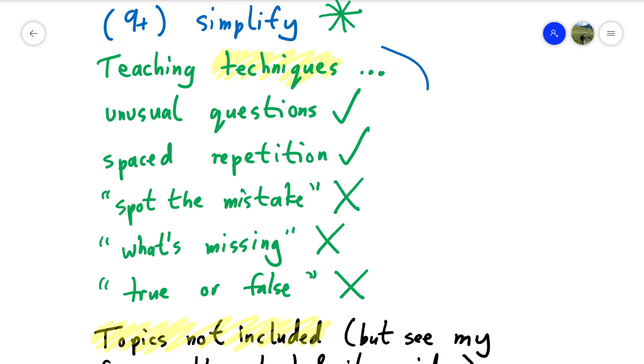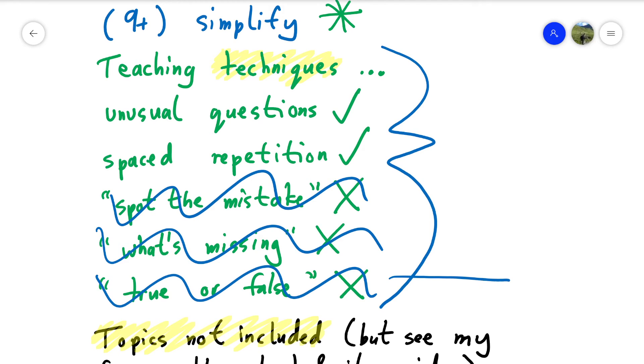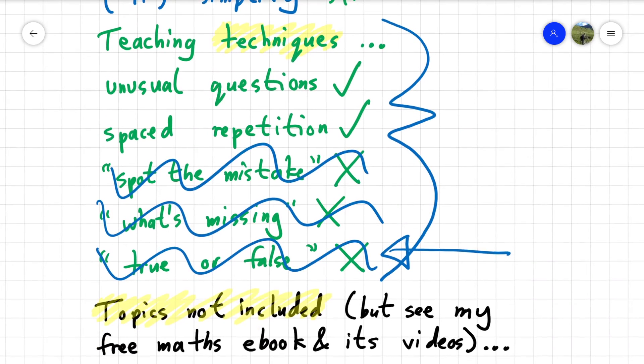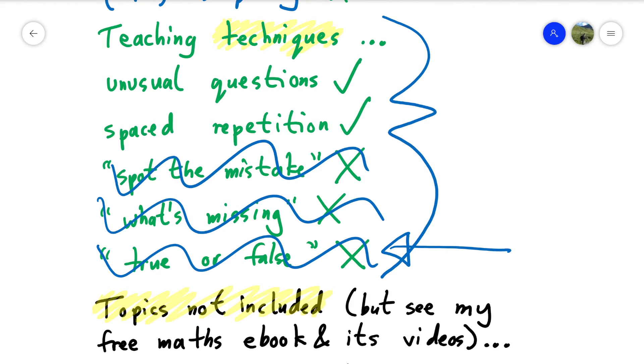Teaching techniques. I just want to briefly mention this. When I'm teaching, I use many different teaching techniques. However, this is a video series, so I'm not using Spot the Mistake, What's Missing, and I'm not using True or False. By the way, I'm a very big fan of True or False as a teaching technique. But I don't think the three I just crossed out work very well for non-interactive videos. I mean that you don't have choices to make. You have to follow the questions in a certain order. So that's why I'm using unusual questions and spaced repetitions as the primary ways of teaching within this series of 23 lessons.